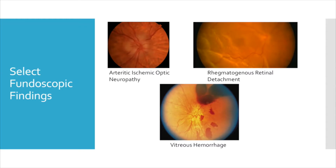Fundoscopic exam in particular can often clearly reveal pathology which can explain acute onset vision loss. Some select fundoscopic images are shown here. In the top left, you can see an example of arteritic ischemic optic neuropathy. Top right, a rhegmatogenous retinal detachment, and on the bottom, you can see evidence of retinal commotio and vitreous hemorrhage.